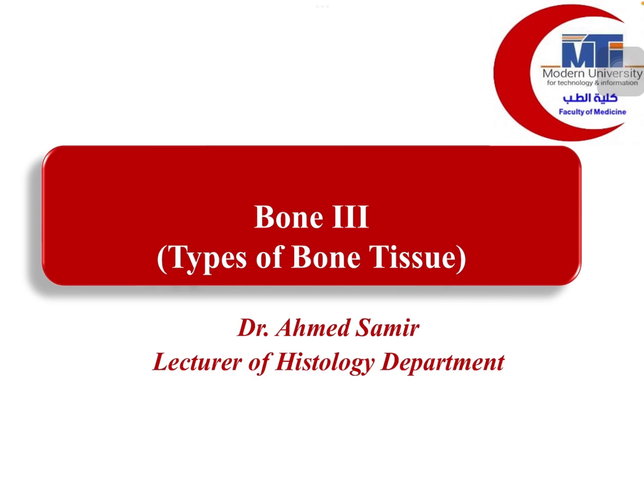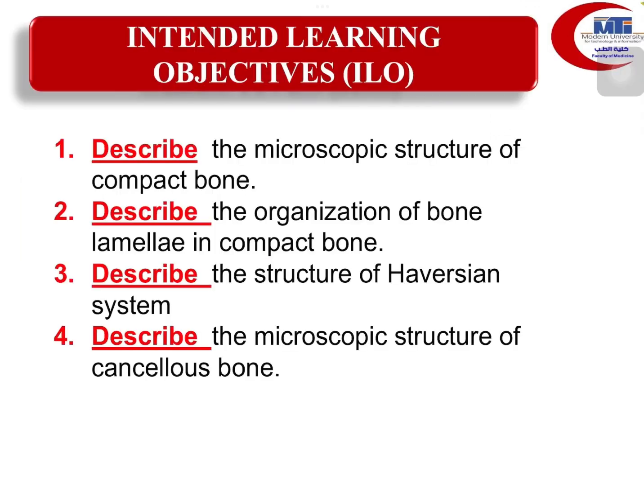Hello dear students. Now we're going to discuss together the different types of bone tissue. By the end of this lecture, you will be able to describe the microscopic structure of compact bone, describe the organization of bone lamellae in compact bone, describe the structure of the Haversian system, and finally describe the microscopic structure of cancellous bone.